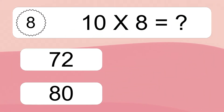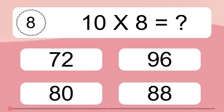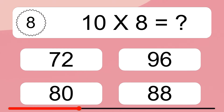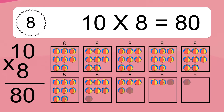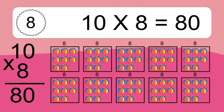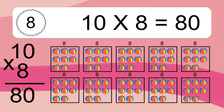10 times 8 equals what? 10 times 8 equals 80. We have 10 boxes and each box has 8 colorful balls inside. If you count all the balls in all the boxes together, you will have 10 times 8 balls. This equals 80 balls.